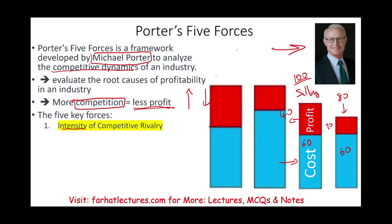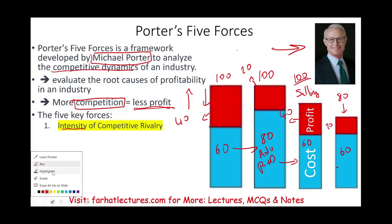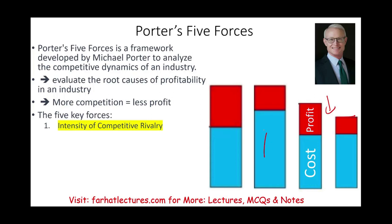Alternatively, if you're selling at $100 with a cost of $60 and a profit of $40, and you want to keep selling at $100, you'll need to differentiate yourself due to competition. You have to make a better product, add features, do more R&D, advertise more, maybe bundle other products. Your cost might rise from $60 to $80, leaving you with only $20 in profit. So more competition means less profit — either you lower your price or increase your expenses.